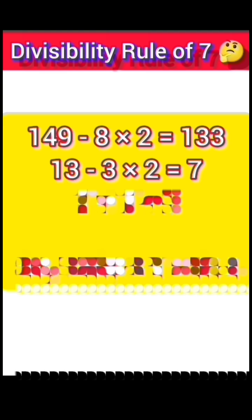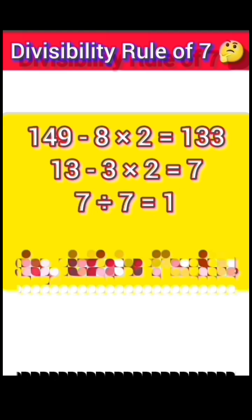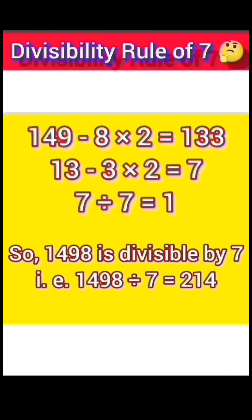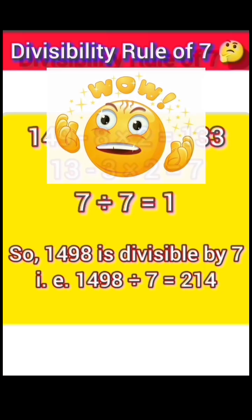7 divided by 7 equals 1, so 1498 is divisible by 7. That is, 1498 divided by 7 equals 214.